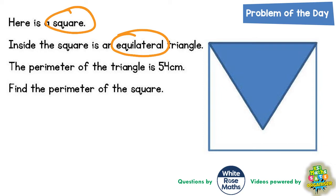It says, inside the square is an equilateral triangle. The perimeter of the triangle is 54. Find the perimeter of the square.